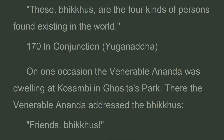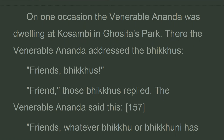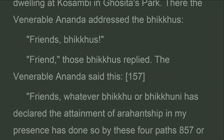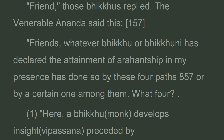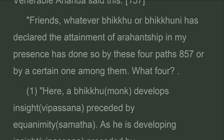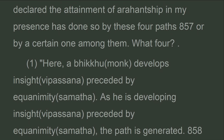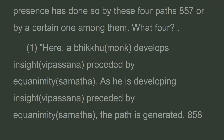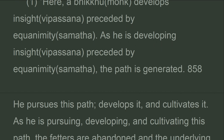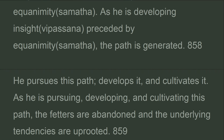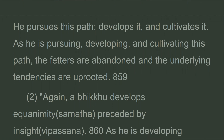In conjunction. On one occasion the Venerable Ananda was dwelling at Kosambi in Ghosita's Park. There the Venerable Ananda addressed the bhikkhus: Friends, whatever bhikkhus or bhikkhunis have declared the attainment of arahantship in my presence have done so by these four paths or by a certain one among them. Here, a bhikkhu develops insight preceded by equanimity. As he is developing insight preceded by equanimity, the path is generated. He pursues, develops, and cultivates this path. As he is doing so, the fetters are abandoned and the underlying tendencies are uprooted.